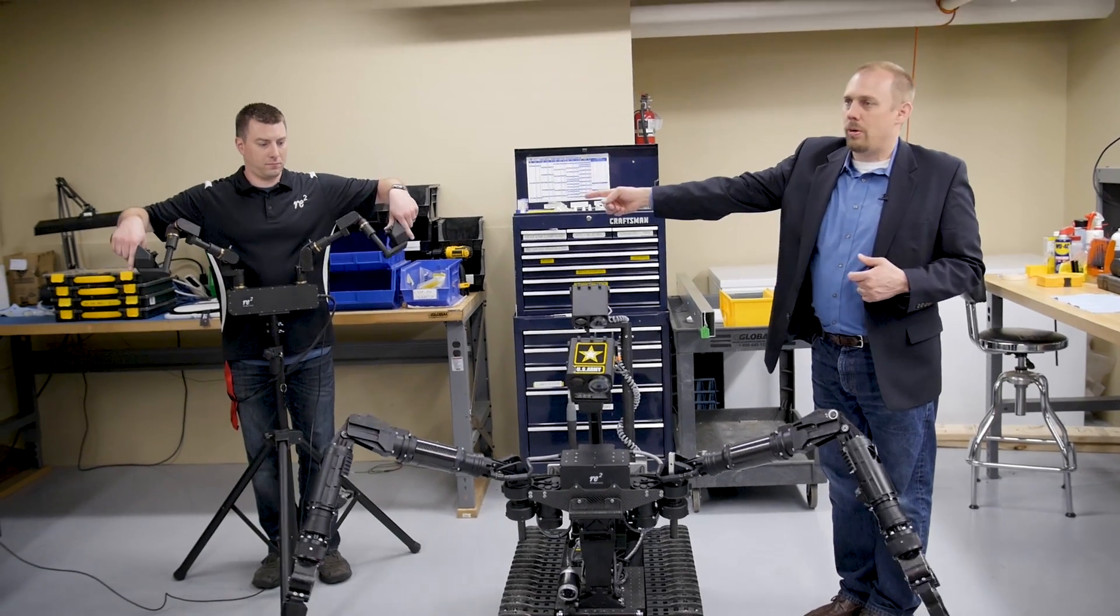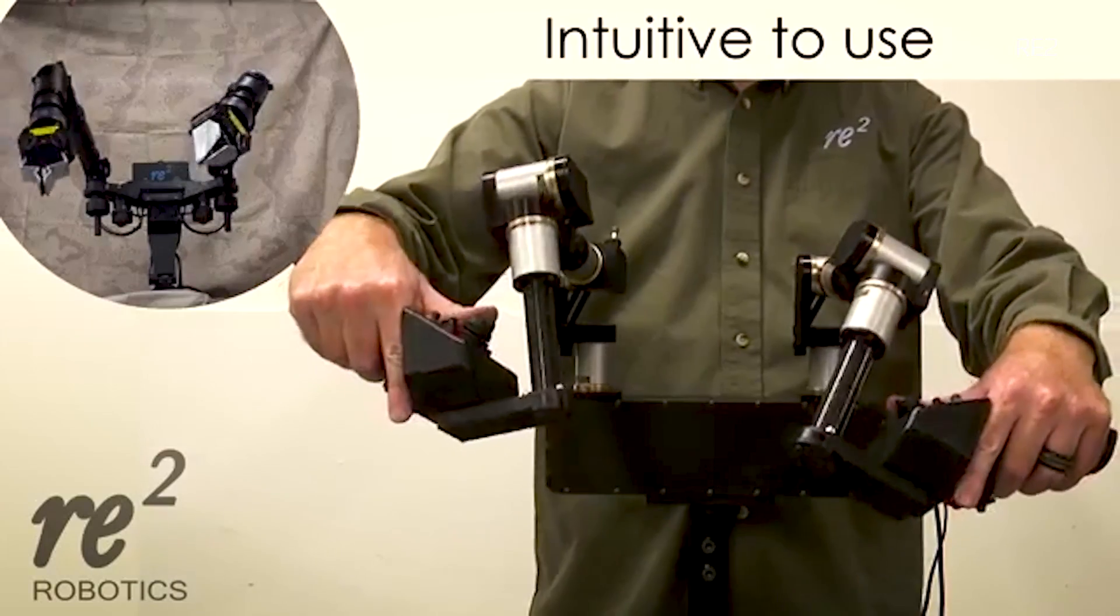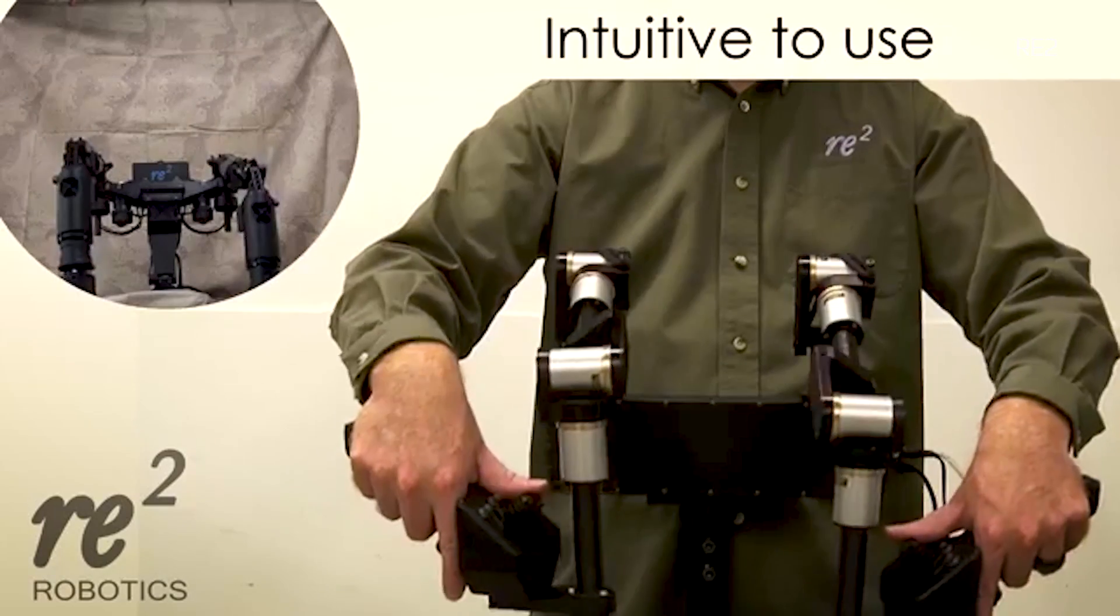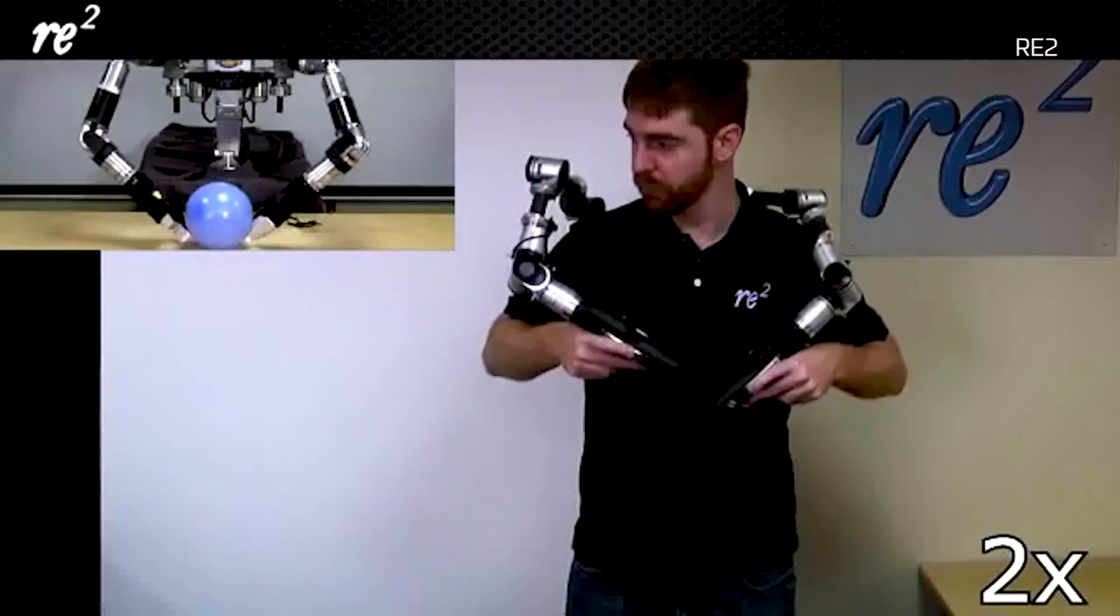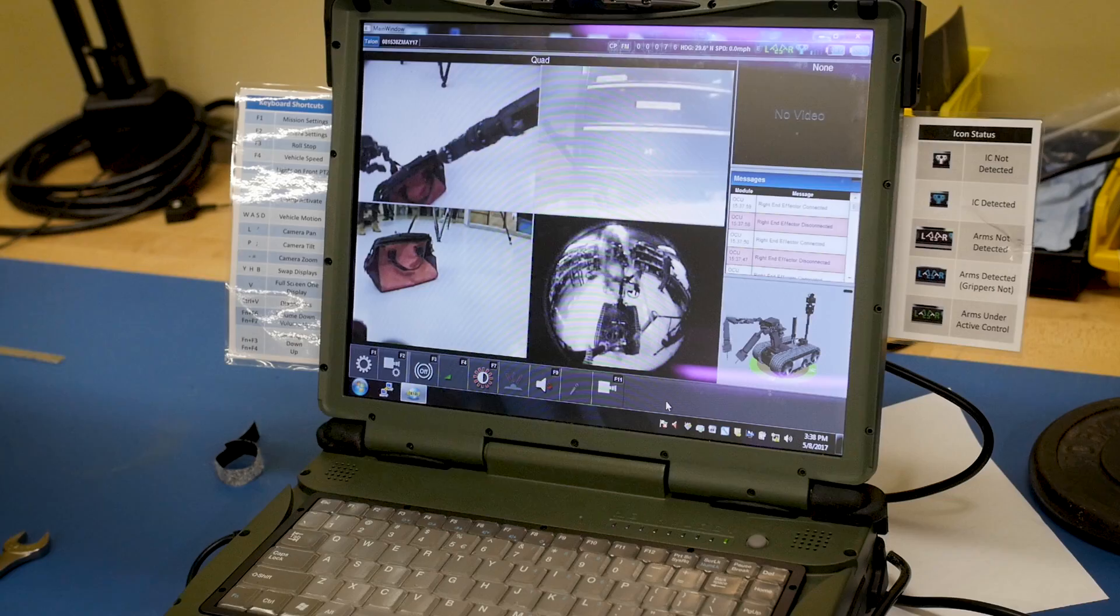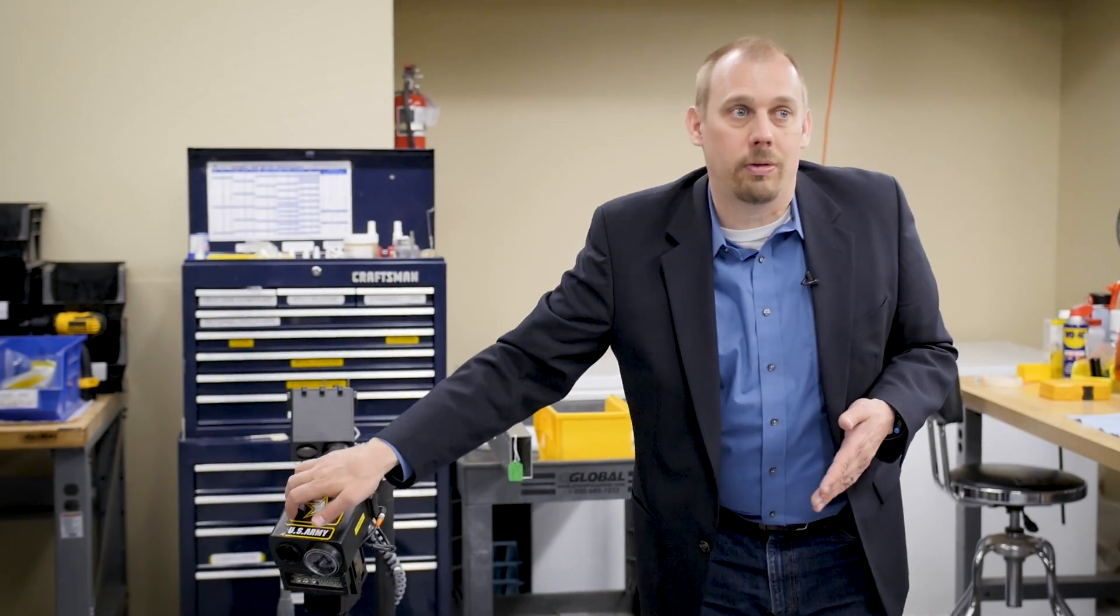However he moves these arms is exactly what the real system does. Because right now what they use in the field is an Xbox controller. So once you have this imitative control, now you have full control over all aspects of the arm. Normally he would be looking through a screen and watching what he's seeing through these cameras.